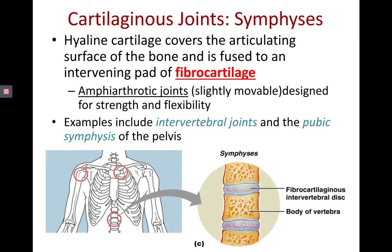Next, let's look at a symphysis. Symphyses tend to be amphiarthrotic — slightly movable — which makes sense when we look at their locations. You have symphyses between intervertebral discs and between the coxal bones. So intervertebral joints and the pubic symphysis are two locations of symphyses. One is even called the pubic symphysis, named for the type of joint it is.